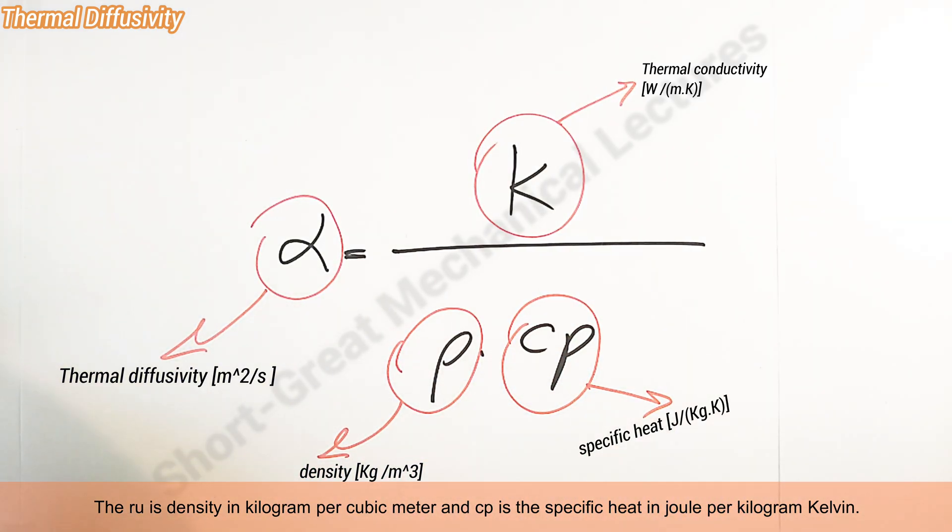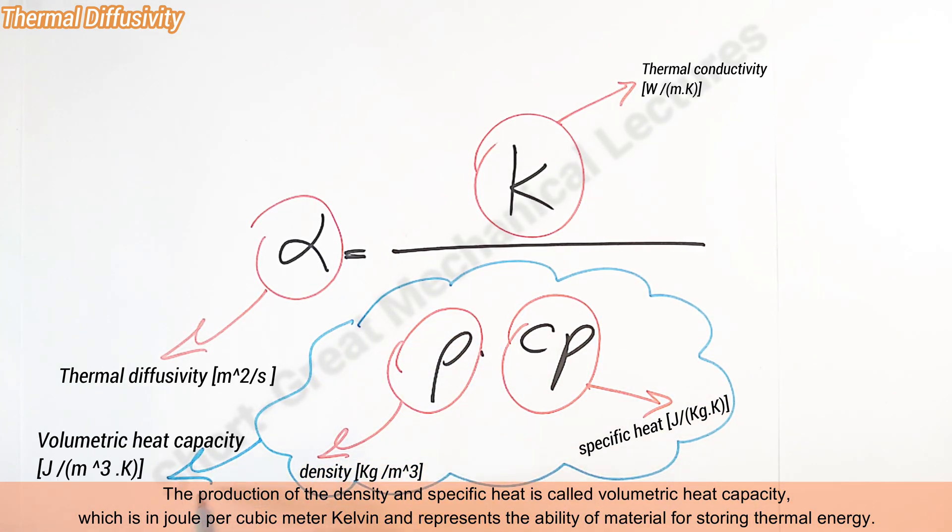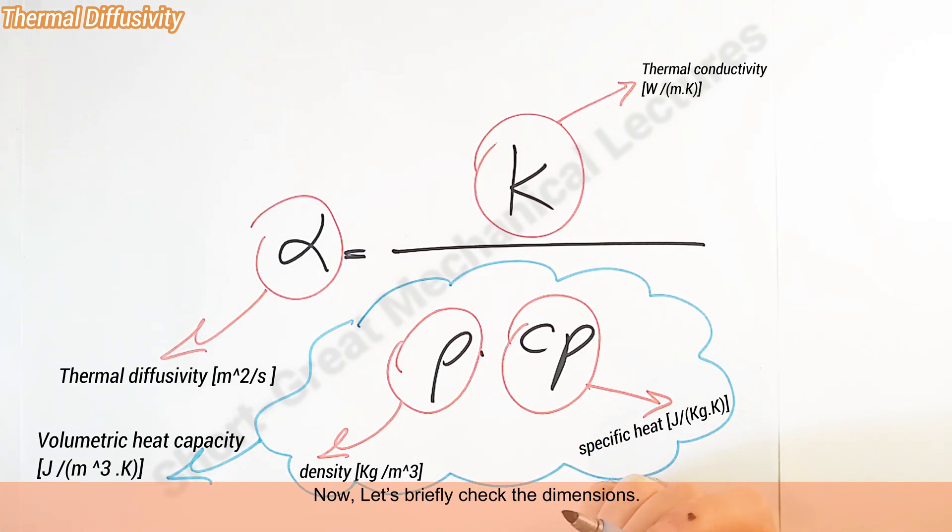The product of the density and specific heat is called volumetric heat capacity, which is in joules per cubic meter kelvin and represents the ability of material for storing thermal energy. Now let's briefly check the dimensions.